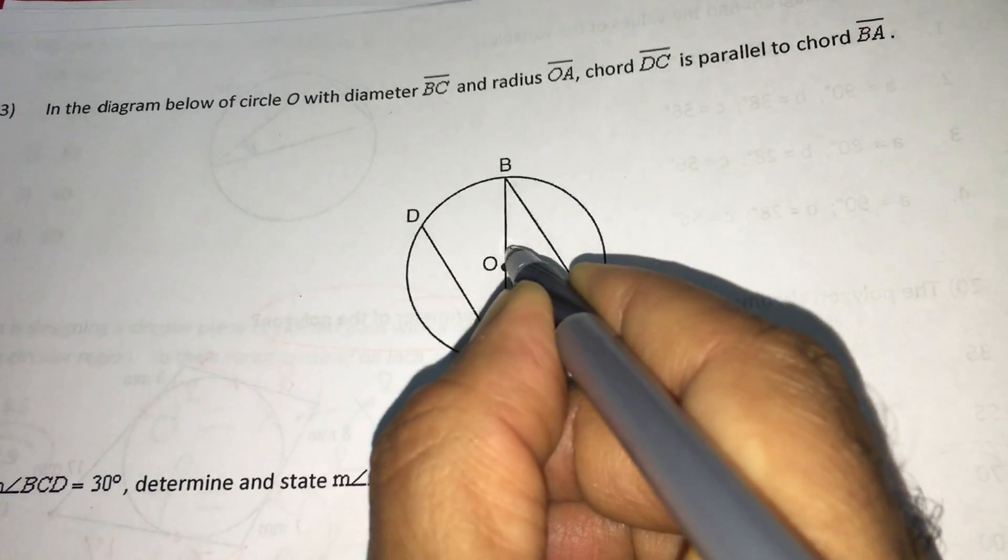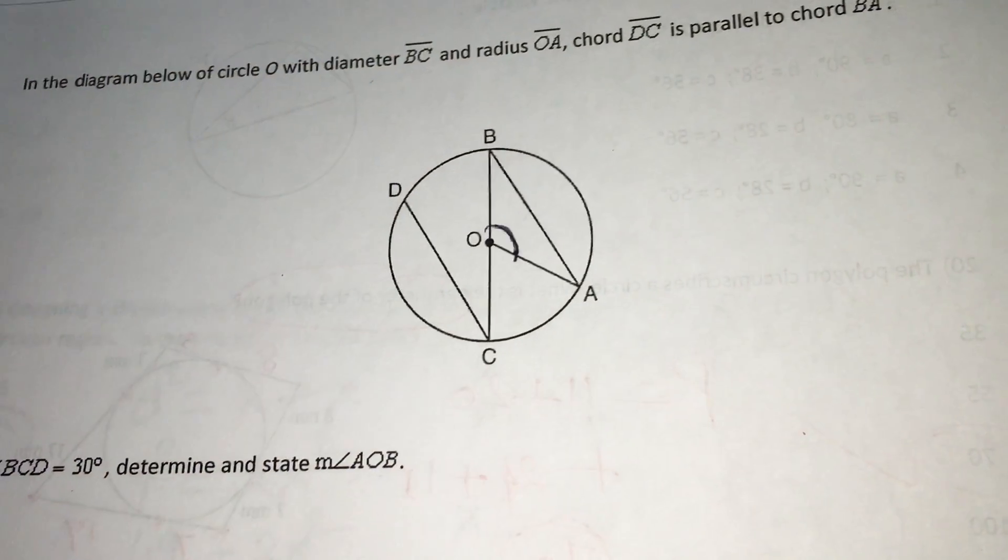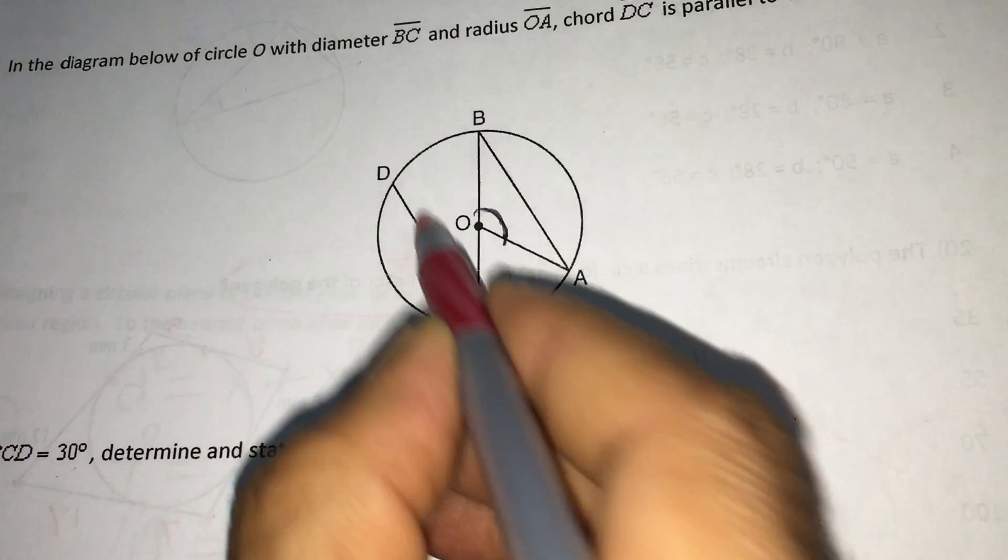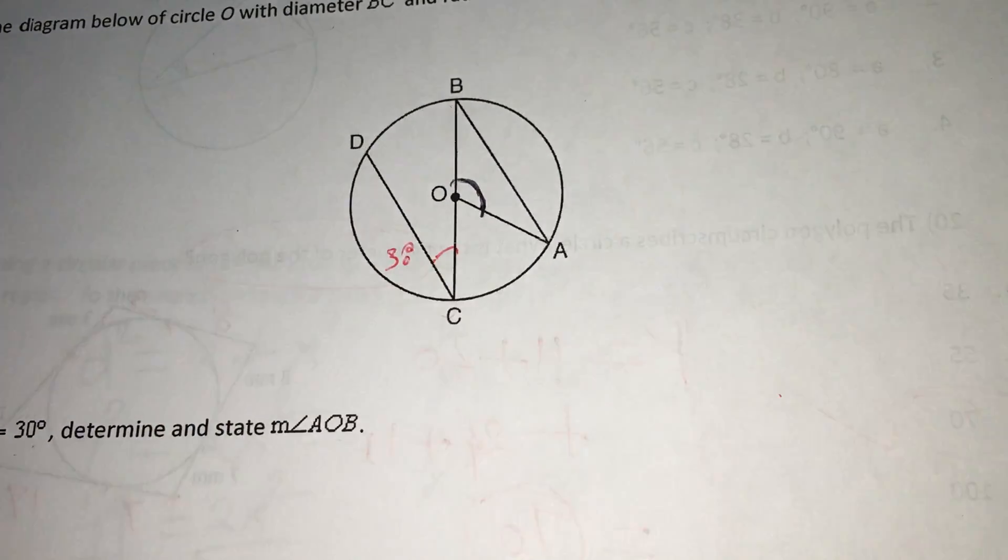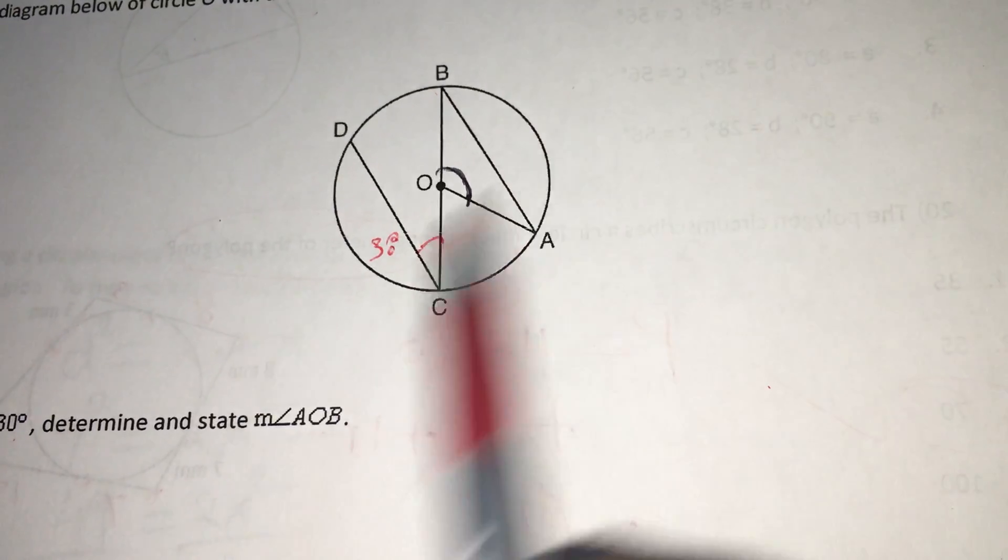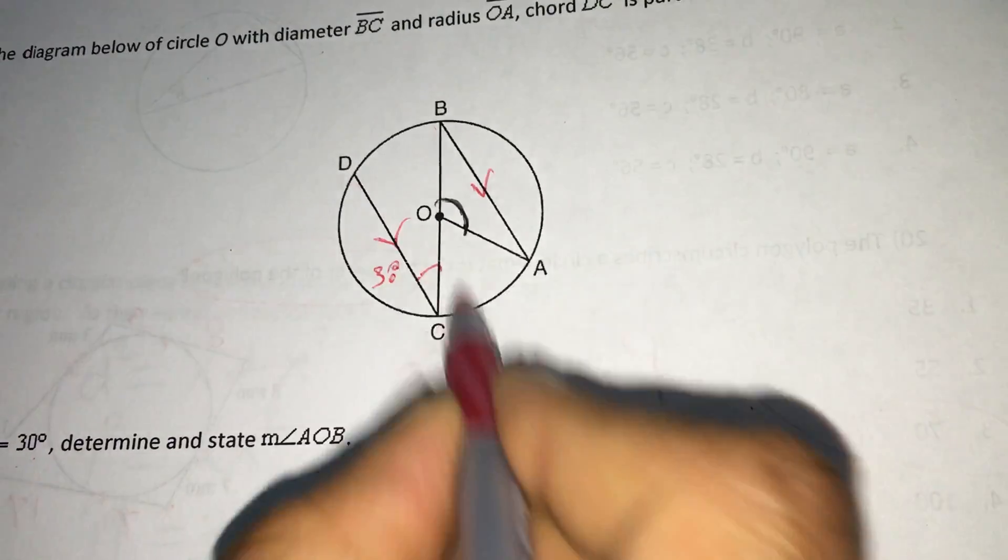He is asking angle AOB. That means this is the angle he is asking and he is giving angle BCD is 30. This angle is 30 degrees given and DC is parallel to BA. That means these two lines are parallel.